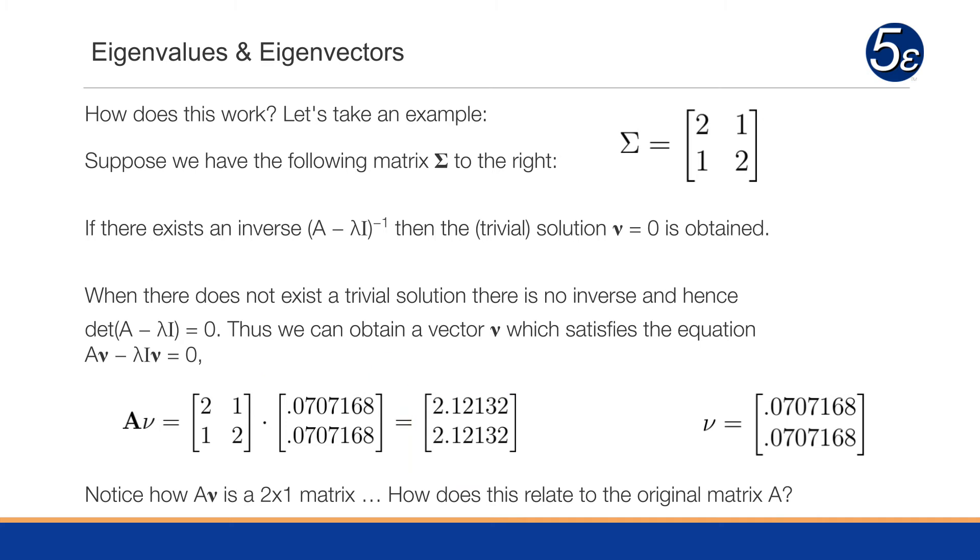So therefore, our eigenvector nu is 0.0707168. So notice, A times nu is a 2 by 1 matrix. Well, how does this relate to the original matrix?